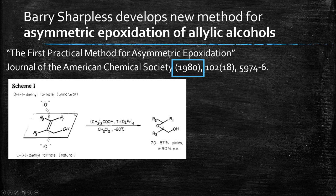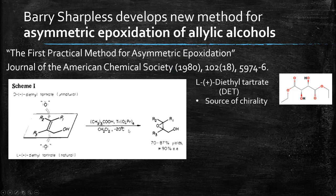There's a picture of it here. What we have is an allylic alcohol — that's the substrate that undergoes the epoxidation reaction. For the reactive ingredients, we have diethyl tartrate, which is the source of chirality. This is a naturally occurring compound, tartaric acid, and this is the diethyl ester of tartaric acid, so it's called diethyl tartrate.